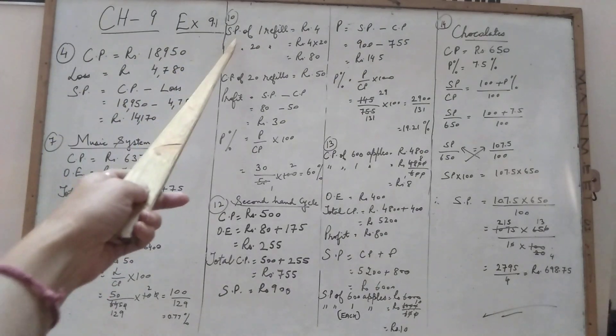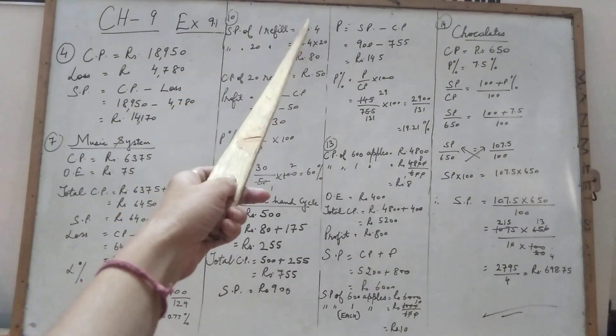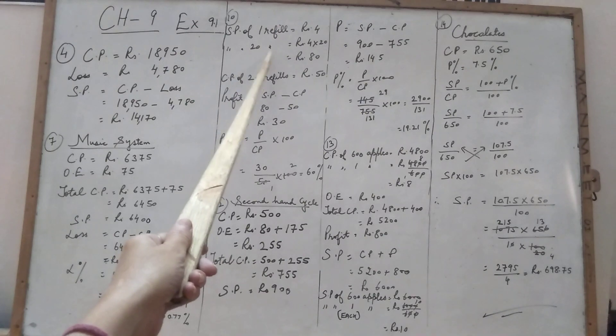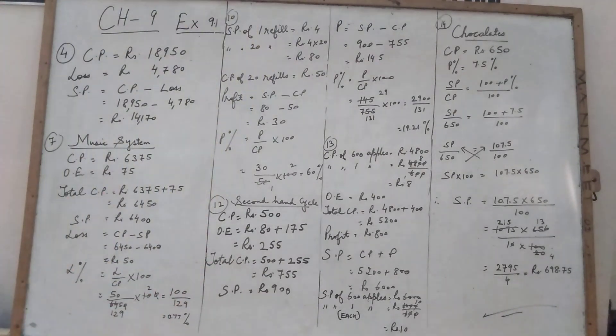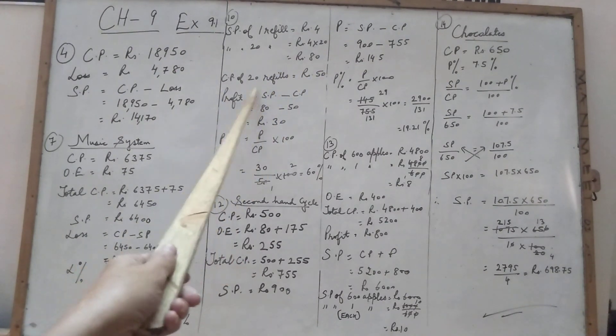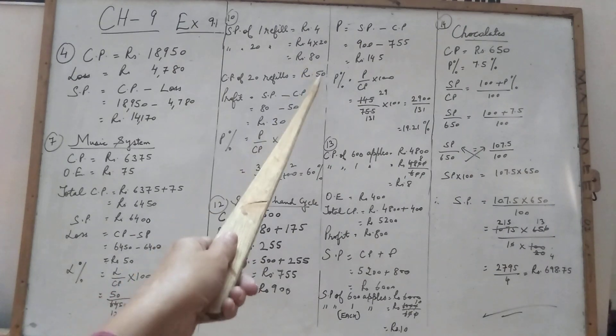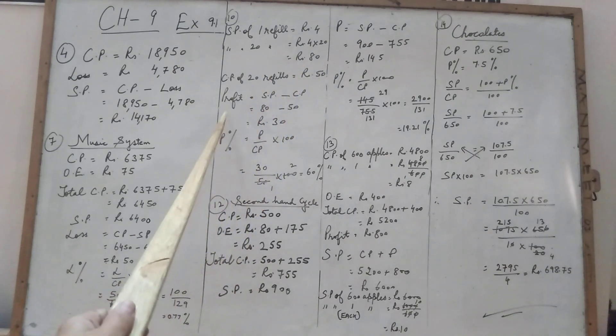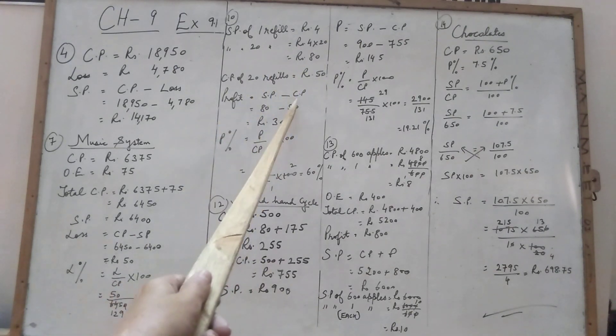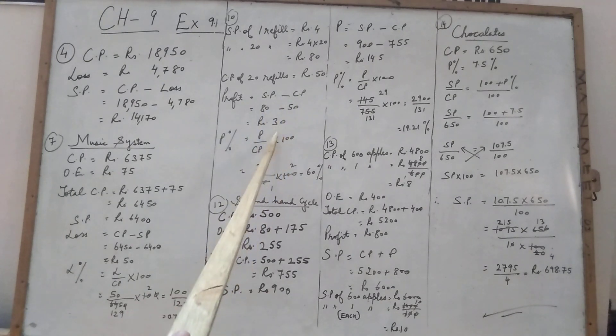Now see again children, selling price of one refill is Rs. 4. And selling price of 20 refills will be Rs. 80. How? 4 into 20. Now cost price of 20 refills is Rs. 50. Now see children, selling price is more than the cost price. Now we got profit. SP minus CP. 80 minus 50, Rs. 30.